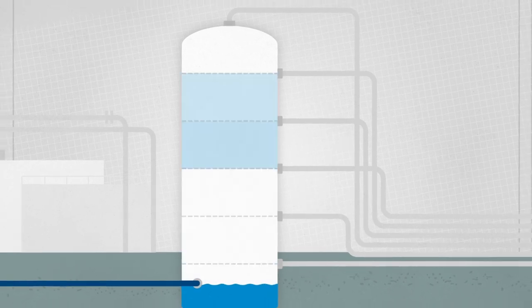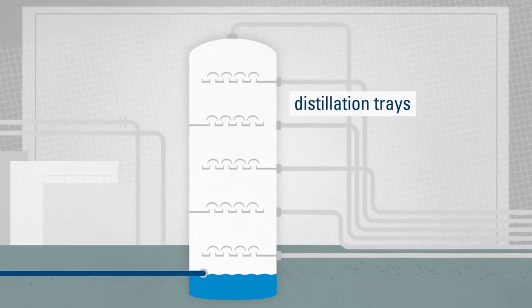The levels of the columns are so-called distillation trays, which have small domed openings.